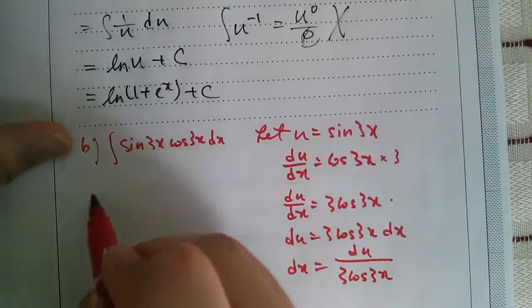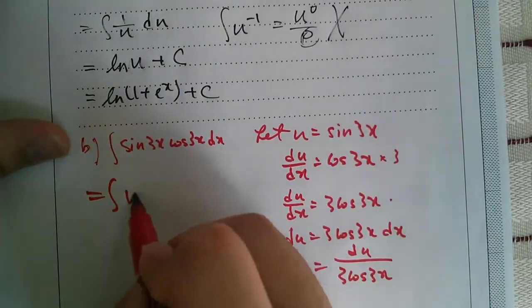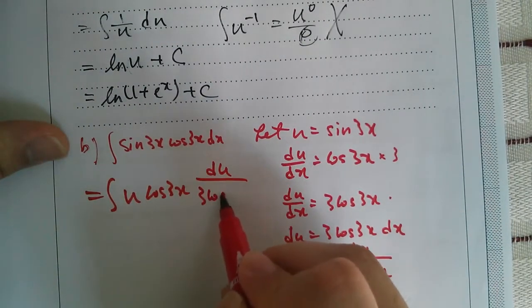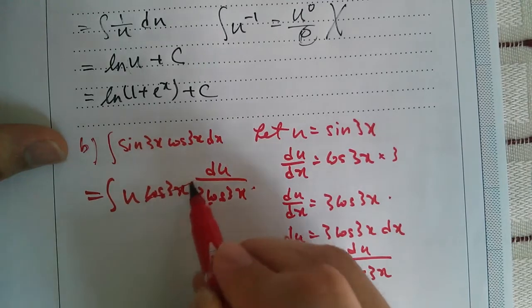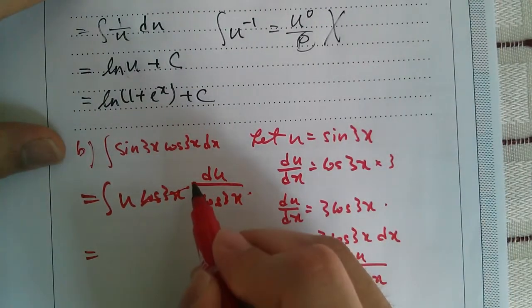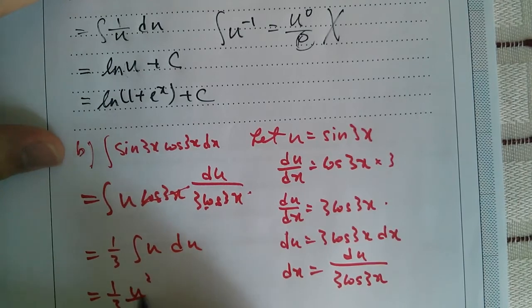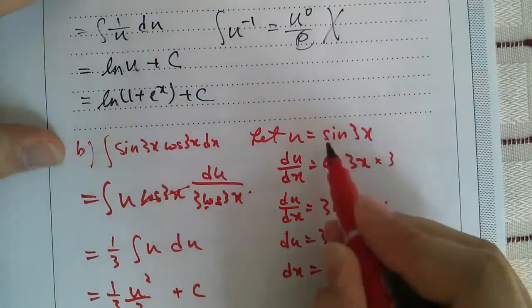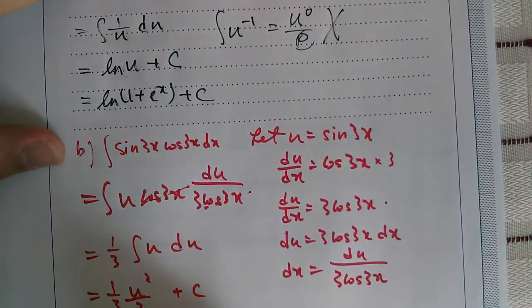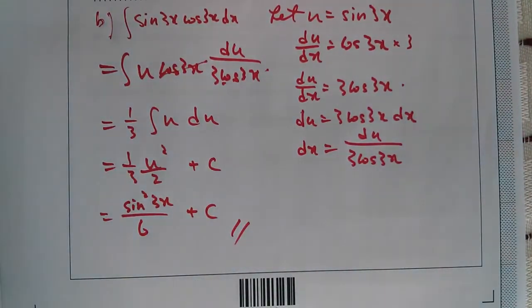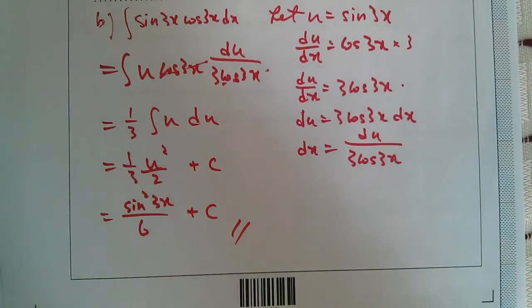Then we do the substituting part. Sin 3x is u, dx is du over 3 cos 3x. Cos 3x and cos 3x cancel out. This is 1/3, so we put it out: 1/3 integral u du. Integrate u du is u squared over 2 plus c, which is 1/6 sin squared 3x plus c. This is the really standard method of substitution for integration. If you totally have no idea what this is, you better learn it right now because this is definitely inside the new syllabus.